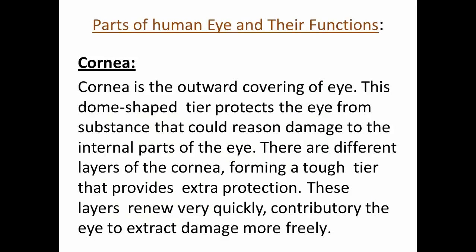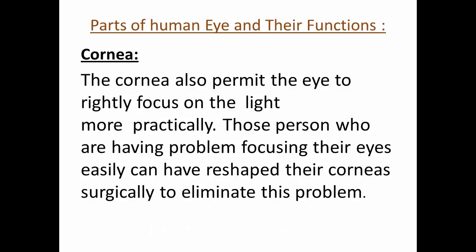Cornea. The cornea is the outward covering of the eye. This dome-shaped layer protects the eye from substances that could cause damage to the internal parts of the eye. There are different layers of the cornea, forming a tough layer that provides extra protection. These layers renew very quickly, allowing the eye to recover from damage more freely. The cornea also permits the eye to properly focus on light.